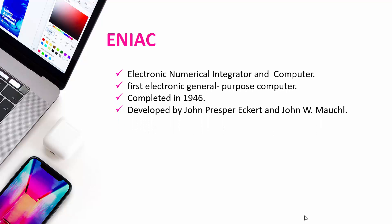Then ENIAC — Electronic Numerical Integrator and Computer. It is the first electronic general purpose computer. General purpose means it is the first computer used for general everyday use. It was completed in 1946 and developed by John Presper Eckert and John W. Mauchly.